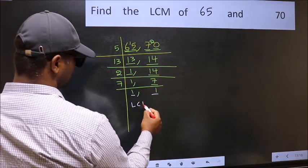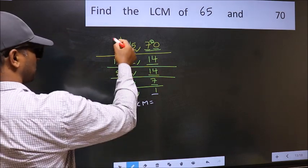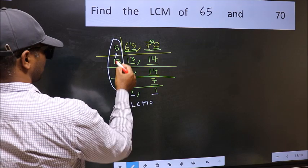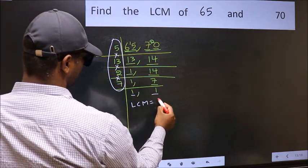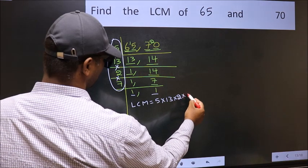So our LCM is the product of these numbers: 5 into 13 into 2 into 7.